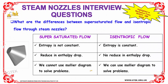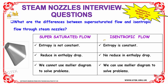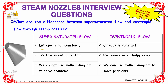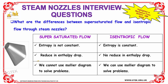The next question is on the comparison between supersaturated flow and isentropic flow through steam nozzles. In supersaturated flow, entropy is not constant, whereas in isentropic flow, entropy is constant. There is a reduction in enthalpy drop in supersaturated flow, whereas in isentropic flow there is no reduction in enthalpy drop. Also, we cannot use the Mollier diagram to solve problems in supersaturated flow, whereas in isentropic flow we can use the Mollier diagram.